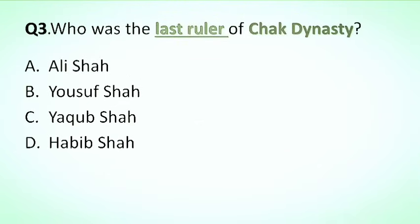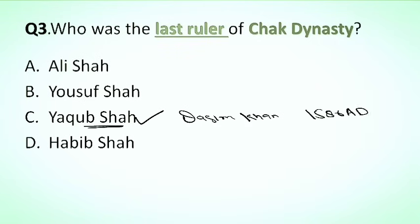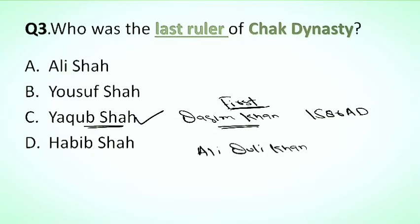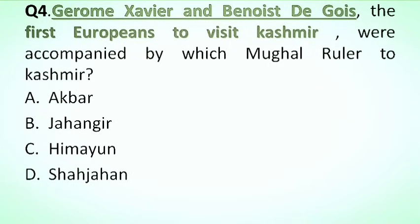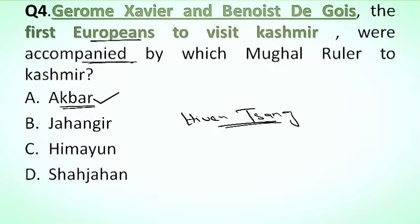Our next question is: who was the last ruler of the Chak dynasty? Options: A. Alisha, B. Yusuf Shah, C. Yaqub Shah, D. Habib Shah. The correct answer is option C, Yaqub Shah. Yaqub Shah was defeated by Mughal general Qasim Khan in 1586 AD, and Qasim Khan became the first Mughal governor of Kashmir. The last Mughal governor was Ali Quli Khan, appointed by Ahmad Shah. Jerome Xavier and Benoit de Goes, the first Europeans to visit Kashmir, were accompanied by the Mughal ruler Akbar into Kashmir. The first Chinese traveler was Xuanzang, who visited during the time of Durlabhavardhana, the founder of the Karkota dynasty.